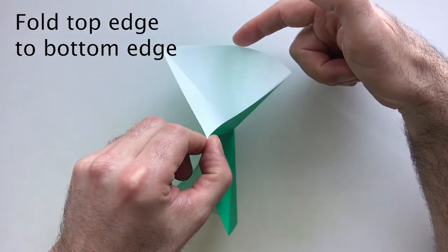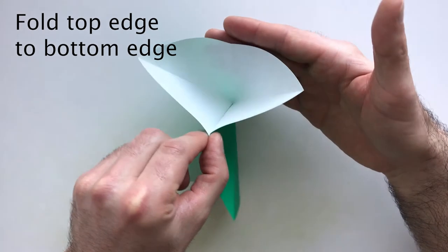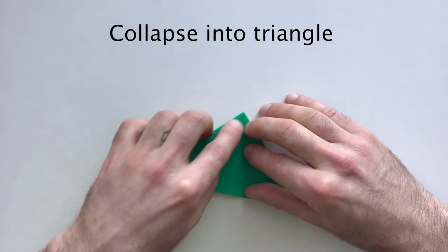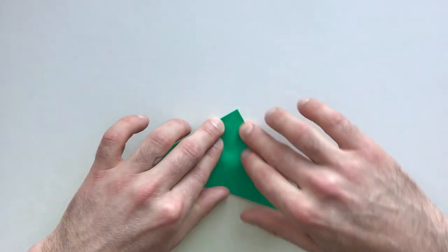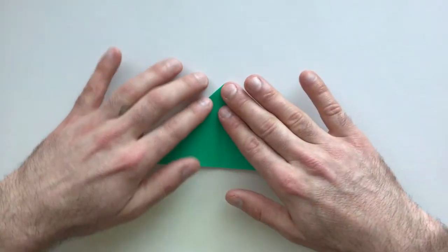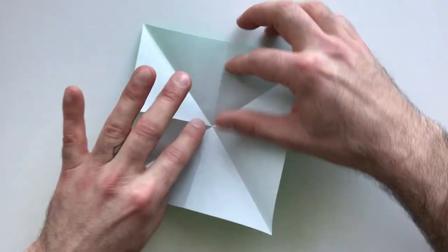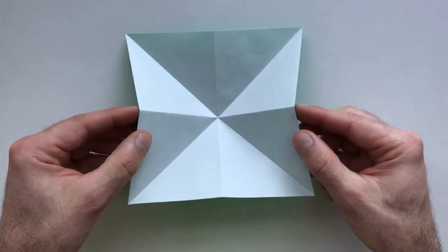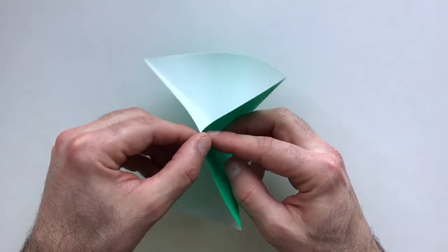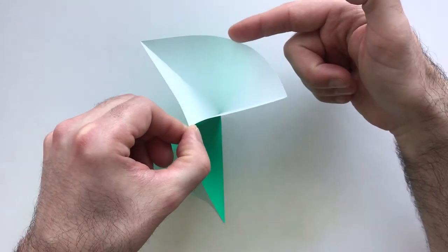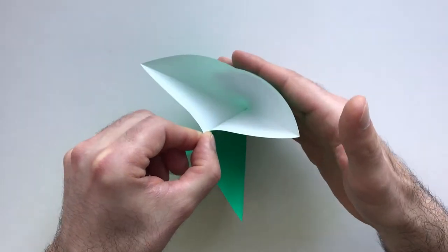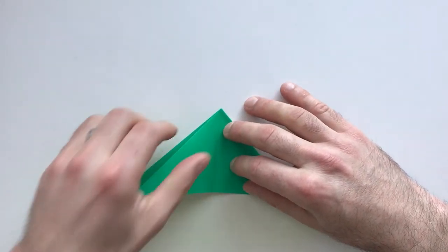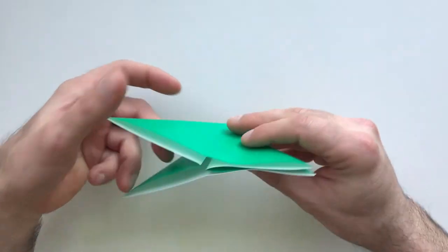Then bring this top edge down to the bottom edge to collapse into a triangle. Now just unfold and fold that again to show you - the two center points up and then top edge down to the bottom edge. It should look like this.